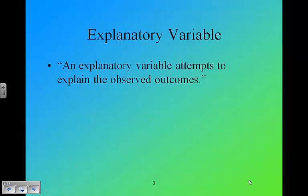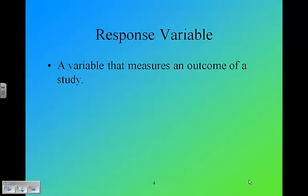An explanatory variable attempts to explain what's happening. It attempts to explain the observed outcomes. Typically the explanatory variable when graphing goes on the x-axis. In a function or equation, we think of the explanatory variable as the x variable. The response variable measures the outcome of the study. That's typically the y variable, and it would go on the y-axis.